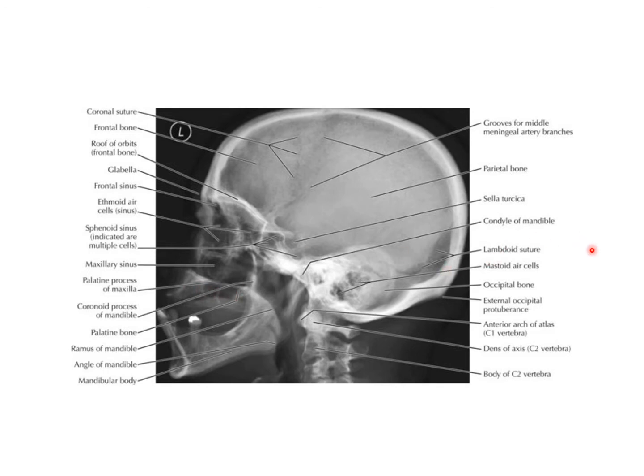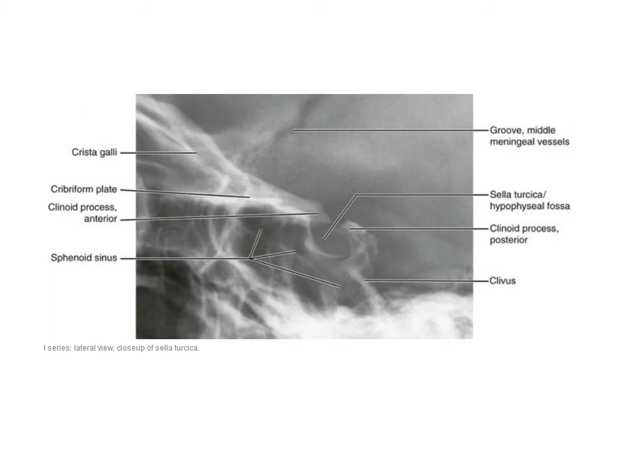The functions of the paranasal sinuses are mainly to warm and humidify the inspired air, to make the skull lighter, and to add resonance to the voice.